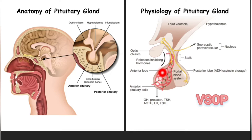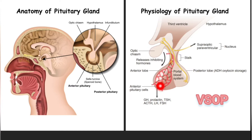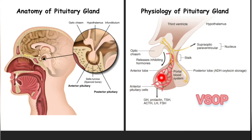The anterior pituitary is derived from Rathke's pouch and is made of epithelial tissue. Inside you find cells that produce hormones: growth hormone, prolactin, thyroid stimulating hormone, ACTH, LH, and FSH.